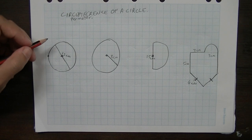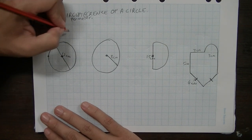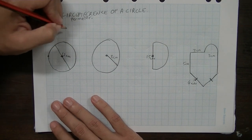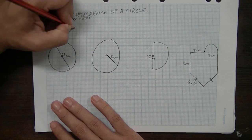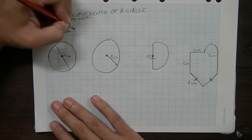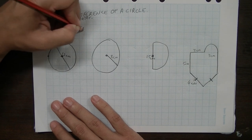Alright, you've probably learnt this stuff before, but let's go over it really quickly. The perimeter, or the circumference of a circle, the circumference of a circle is equal to pi d.